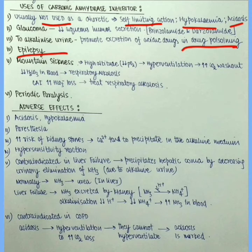It is contraindicated in liver failure because it precipitates hepatic coma by decreasing urinary elimination of ammonia due to alkalinization of urine. We shall understand this in detail. Normally, urea is reduced from ammonia in the liver which is then excreted by the kidney. But in case of liver failure, ammonia cannot be converted into the urea in the liver.